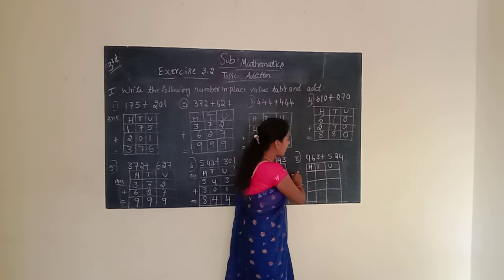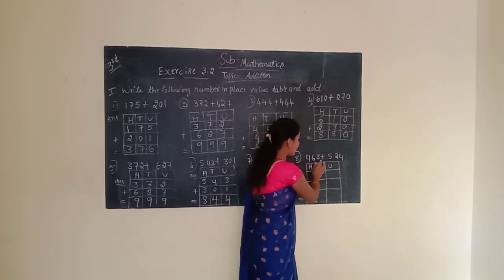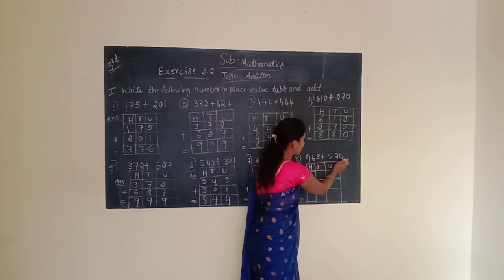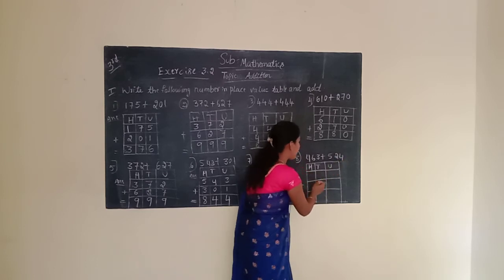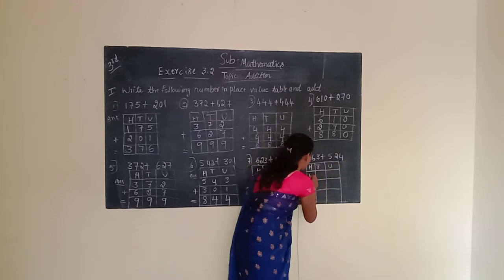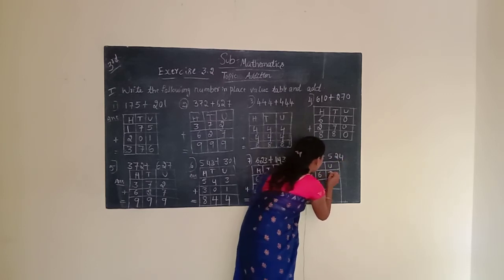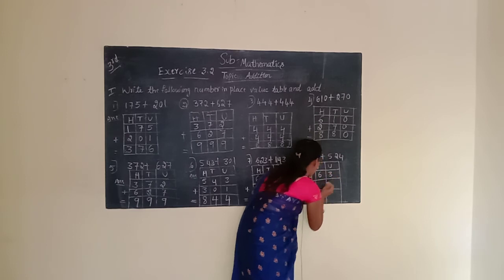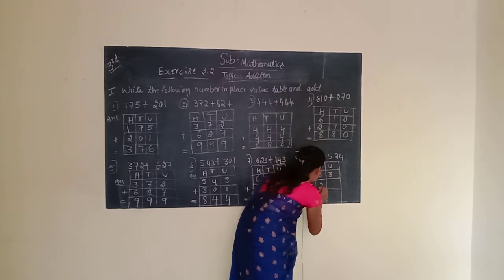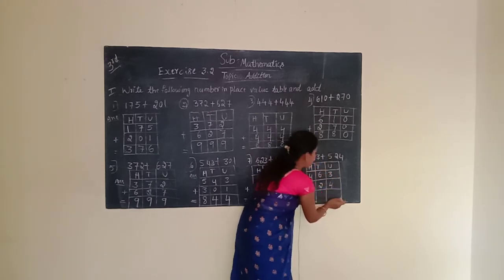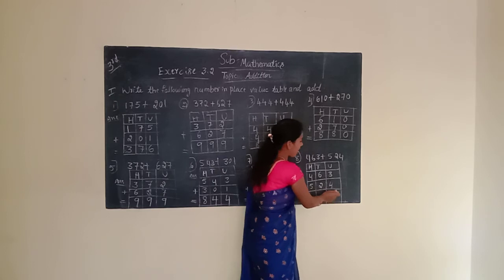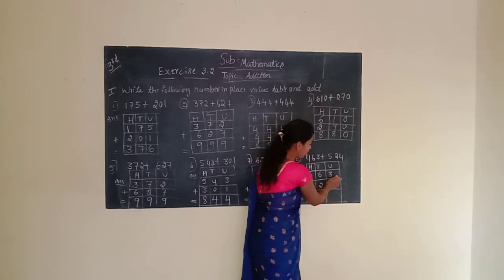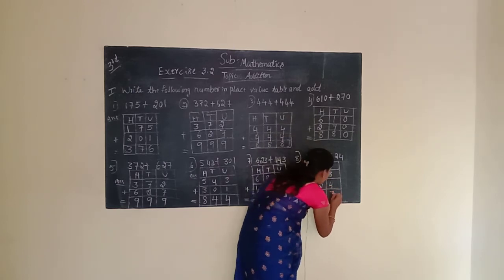Next, eighth question. The given number is 463 plus 524. Arrange this number in the place value chart — 463 plus 524. Now we have to start adding. First, we have to start from the unit place. Unit place is having 3 and 4. 3 plus 4 is 7. We have to write 7.